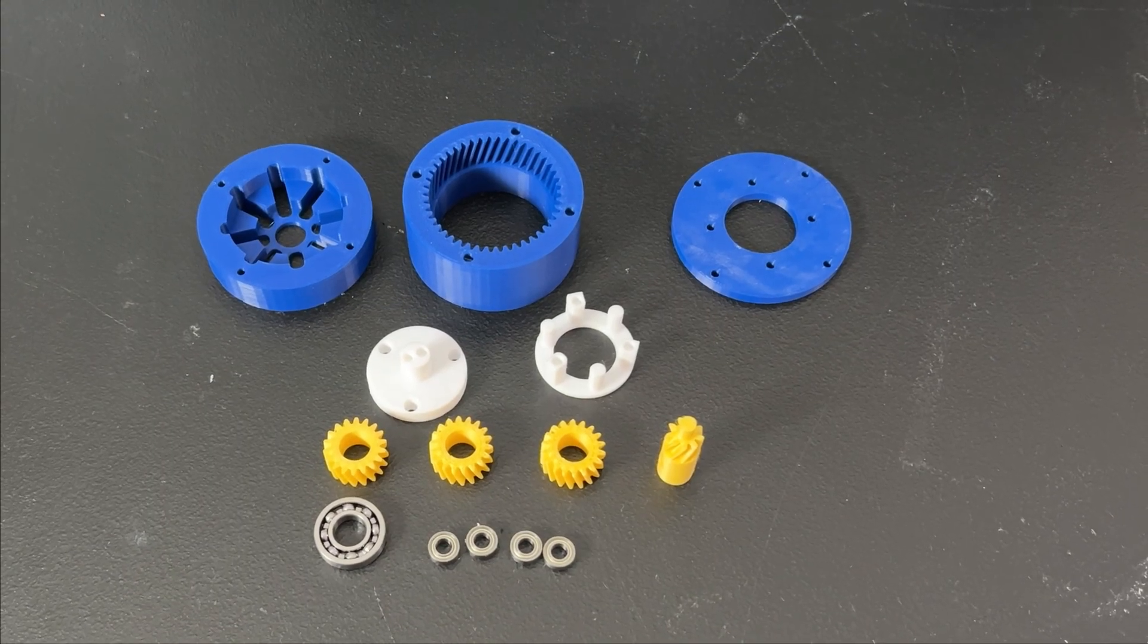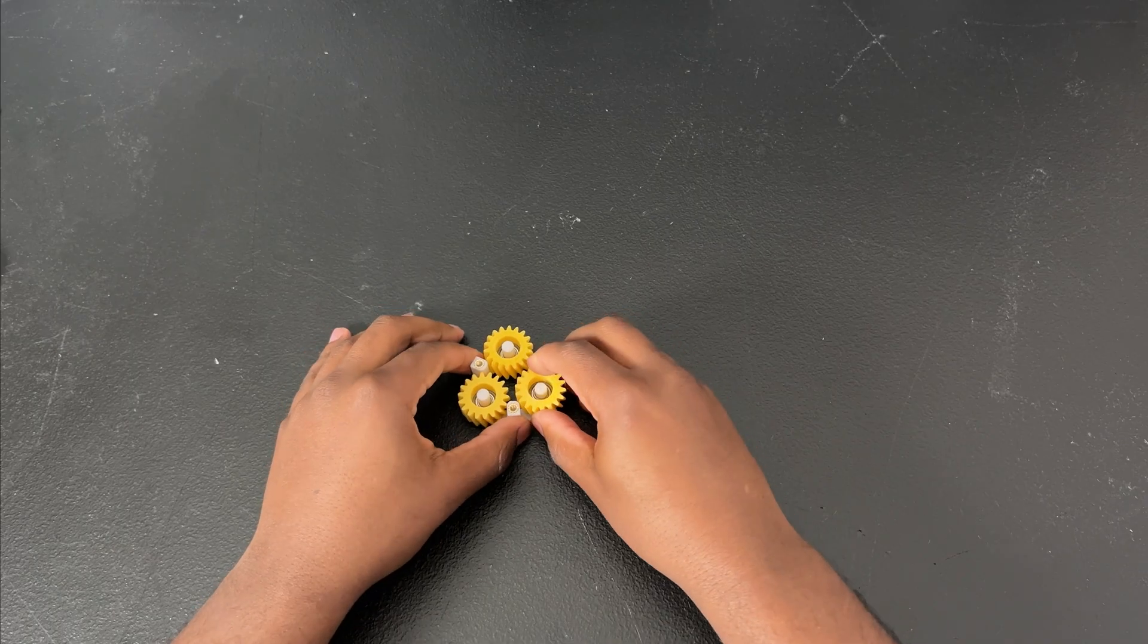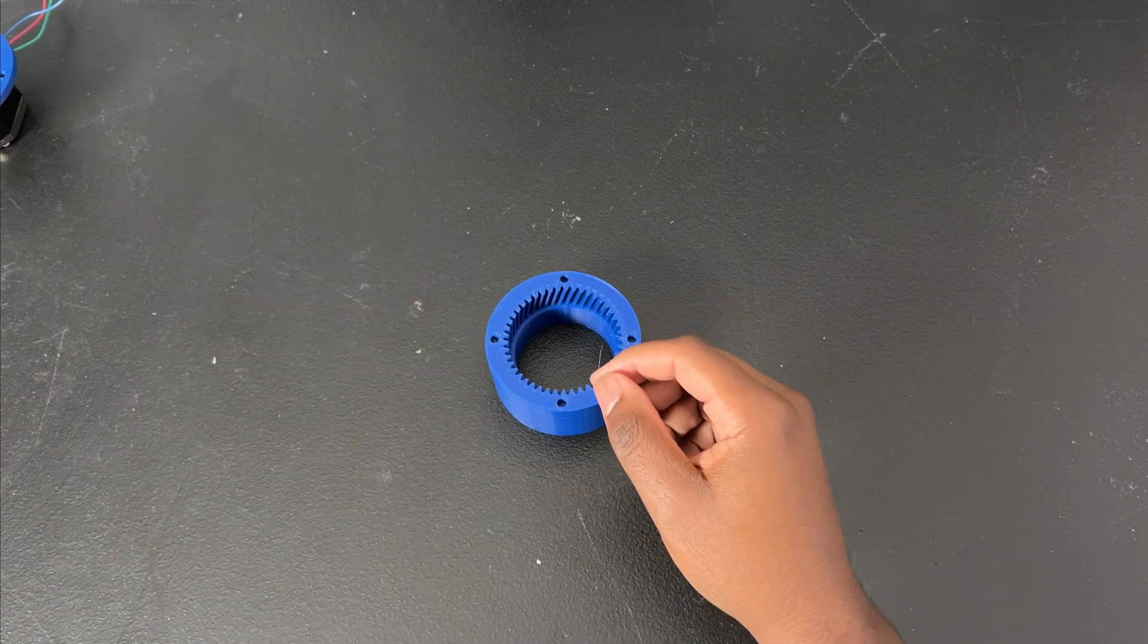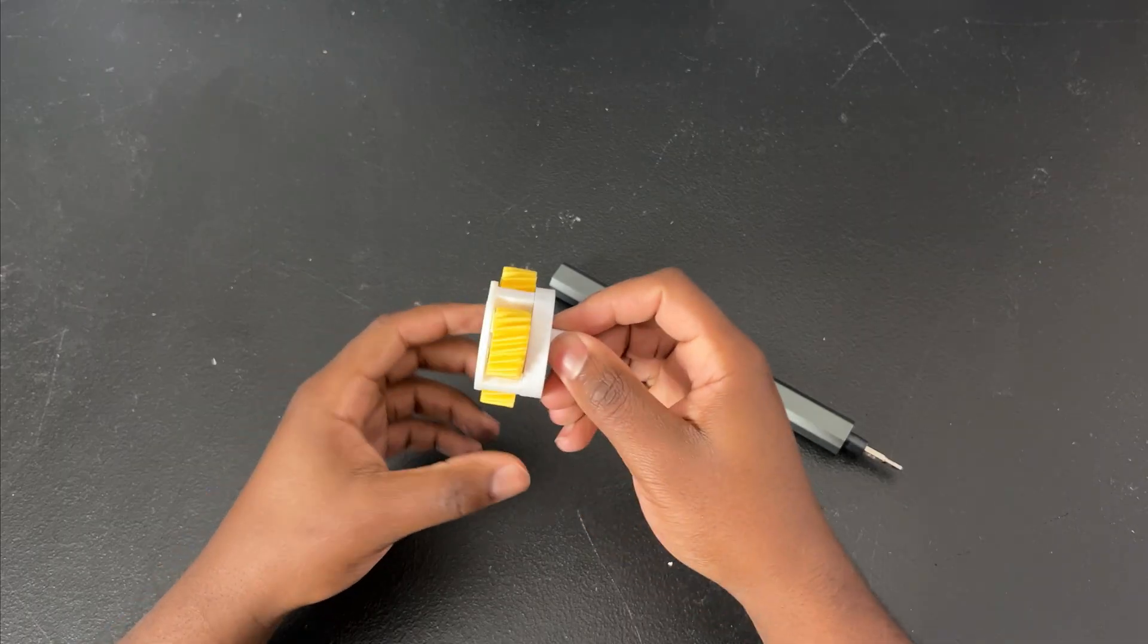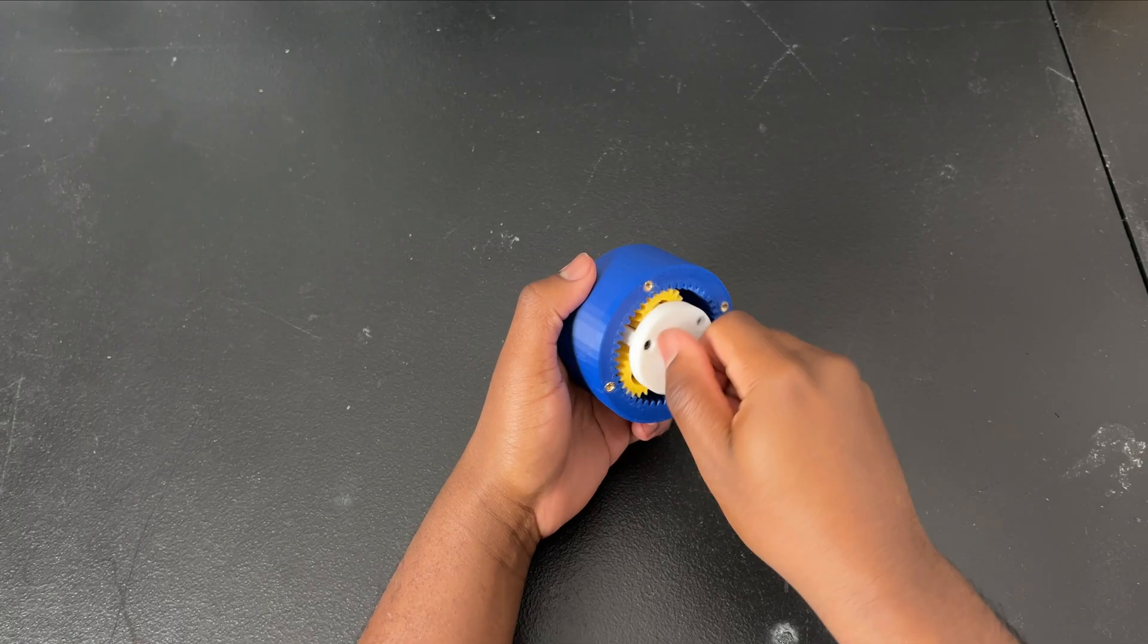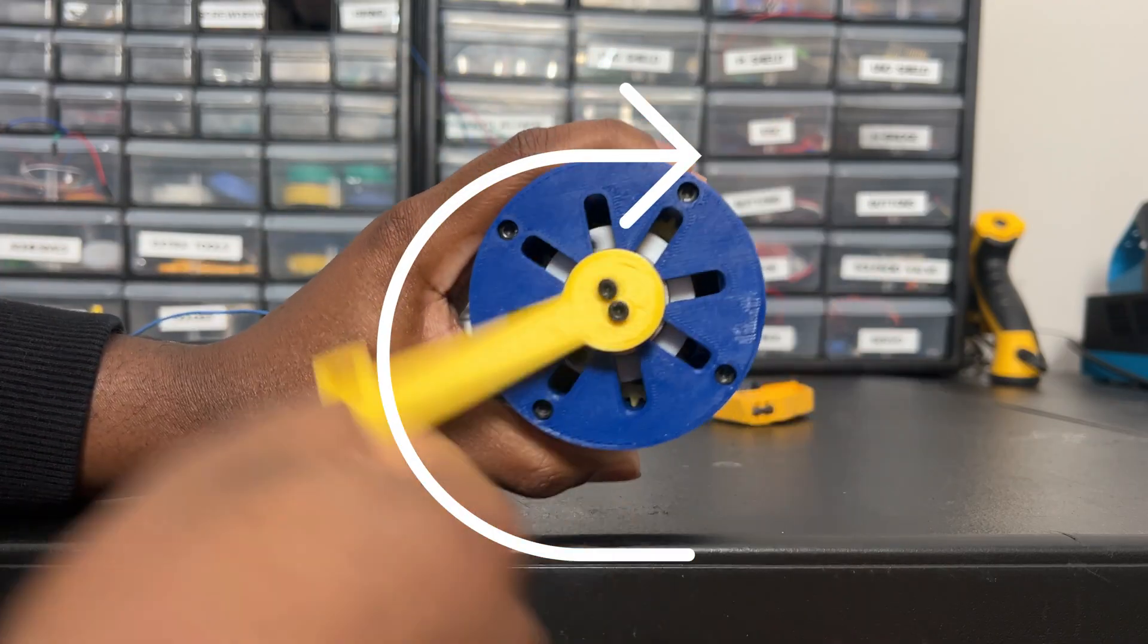A planetary gearbox has four key components: a sun gear, planet gears, a planet carrier, and the ring gear. The sun gear is the input connected to our motor, the planet carrier holds the planets, and the planets mesh and rotate inside of the ring gear, so we can use the planet carrier as our output.